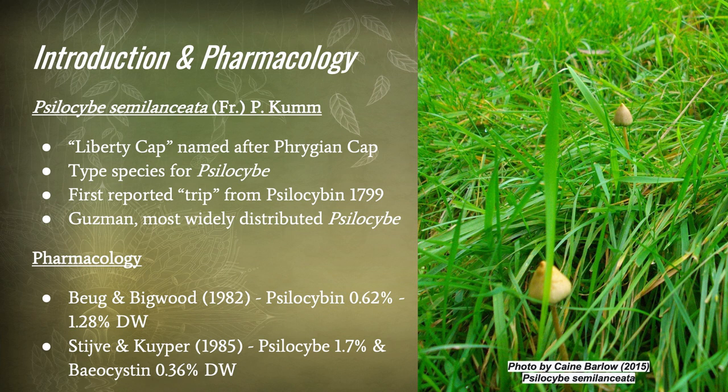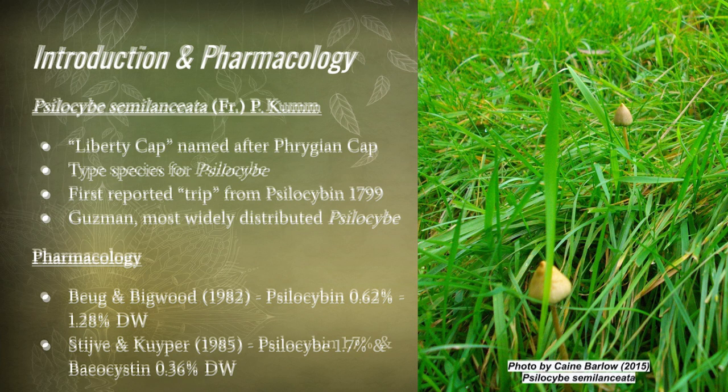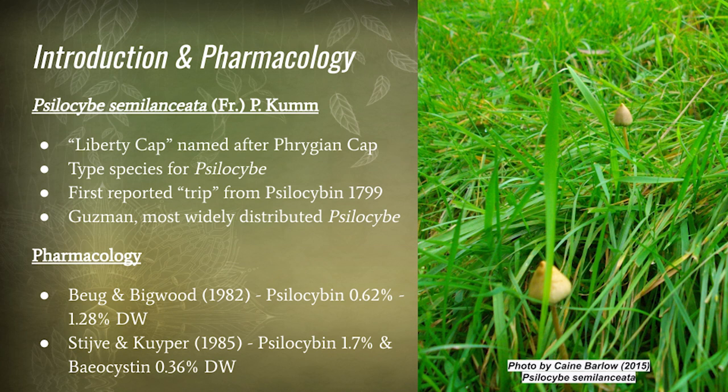Semilanceata is now the type species for Psilocybe — what we refer to taxonomically for the whole Psilocybe genus. It was the first reported Psilocybe to result in a trip that was documented and reported. It's also been reported by Gaston Guzman as the most widely distributed Psilocybe.